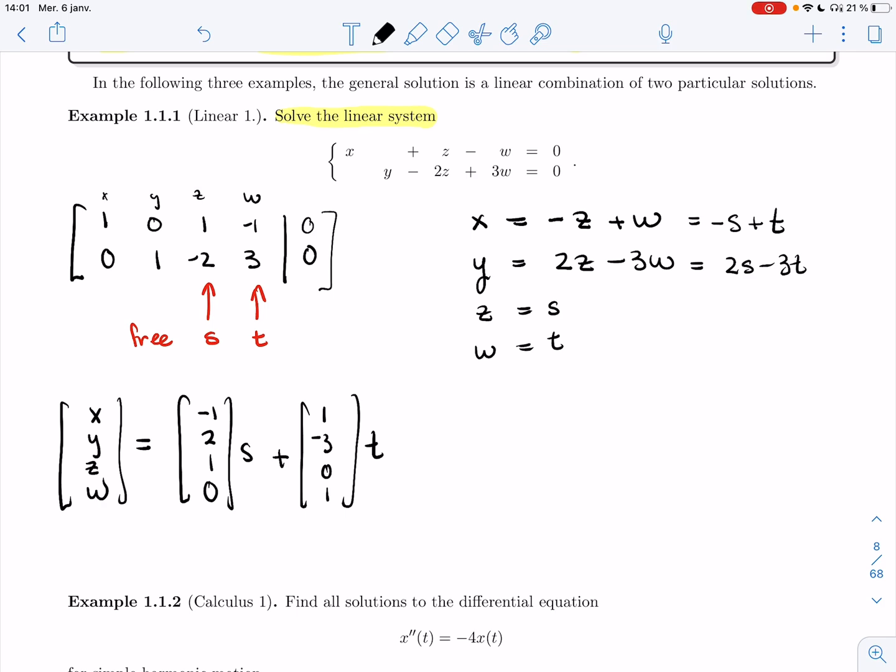In the end, what I get is that x, y, z, w equals the coefficients of s first, so minus 1, 2, 1, 0, and then the coefficients of t will be 1, minus 3, 0, 1. So what we have here is a vector times a real number s, and a second vector times another real value t, for s and t in R.